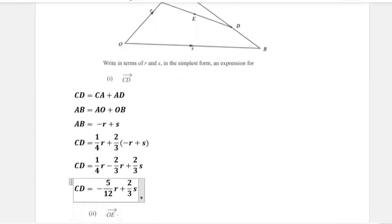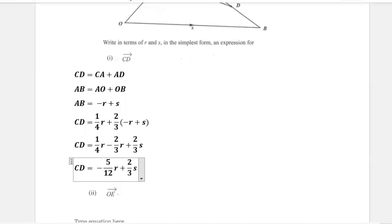So CD equals negative 5 over 12 R plus 2 thirds S. If you're not using a calculator, you can work out the fractions: 1 over 4 minus 2 thirds gives the same answer of negative 5 over 12 R. That is our expression in its simplest form.